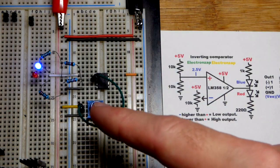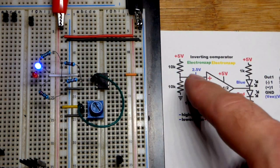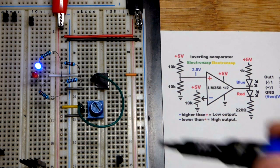So now in this video we have an inverting comparator. We set our reference voltage to half the supply voltage, 2.5 volts.